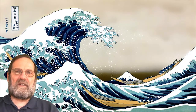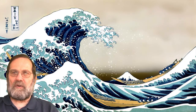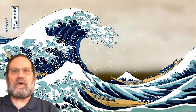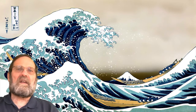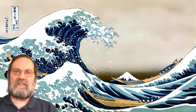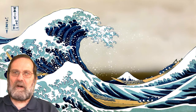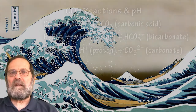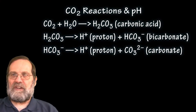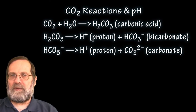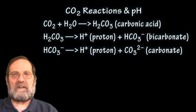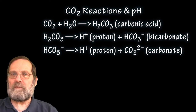As carbon dioxide concentrations in the atmosphere double or triple during this century, more carbon dioxide will dissolve in the oceans and form carbonic acid. This carbonic acid dissociates in water to release a proton and bicarbonate, and then again to release another proton and carbonate. CO₂ plus water yields H₂CO₃; H₂CO₃ yields a proton plus HCO₃⁻; HCO₃⁻ yields a proton plus CO₃²⁻.